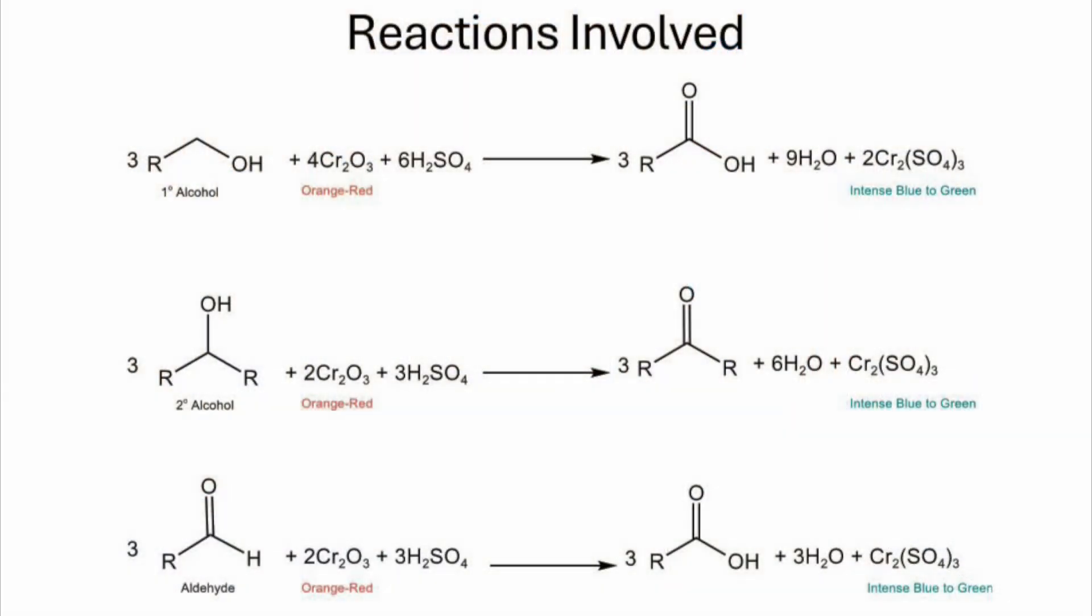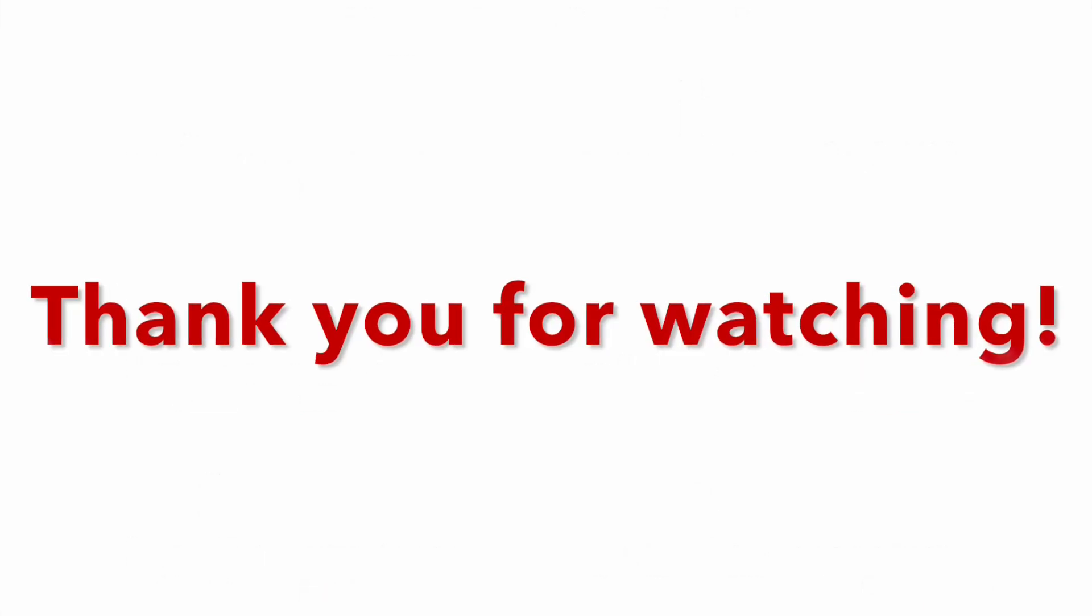We can see here the reactions involved. In each case, we are adding chromium oxide, which is indeed our Jones reagent and has an orange to red color. Also notice that whenever we have a primary alcohol, secondary alcohol, or aldehyde, chromium sulfate is forming, and chromium sulfate has an intense blue to green color as you observed in the video for a positive test. Thank you for watching.